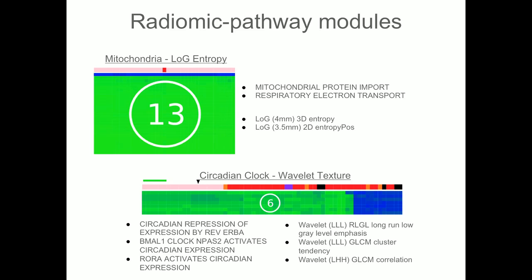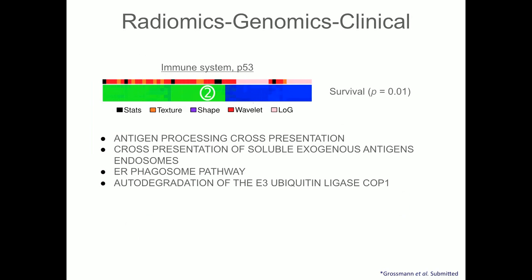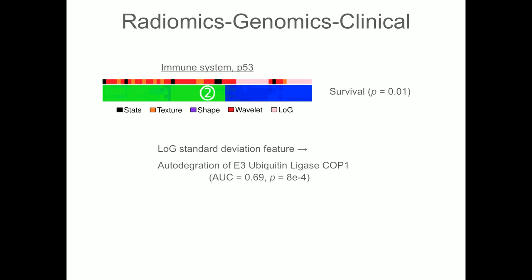Perhaps most importantly, we found an immune system P53 module where different biological processes were associated with it. When we tried to use a radiomics feature to predict the activation of this pathway, we found a very high and significant correlation in an independent validation set — we trained on the discovery data and found a significant association in validation. You can really see the assessment between driving pathways driving a different phenotype and how that is associated with clinical outcome.